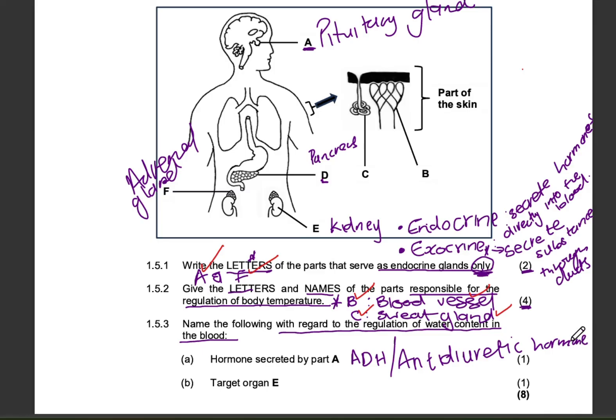Then, give us the target organ. When ADH is secreted by the pituitary gland, it travels in the blood to basically go to the kidney. So, target organ E is the kidney. It will obviously go into the kidney and basically regulate water content in the blood by either increasing or decreasing the permeability of the renal tubules, the distal convoluted tubule and the collecting duct.